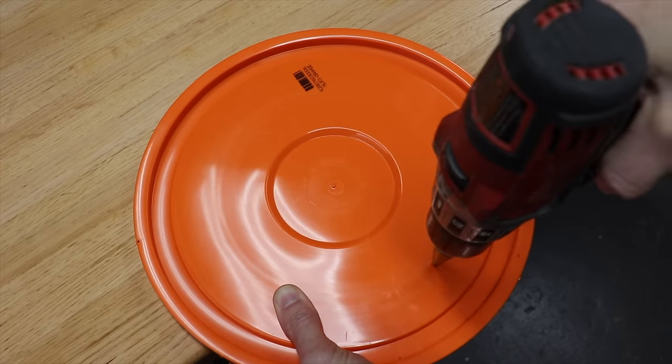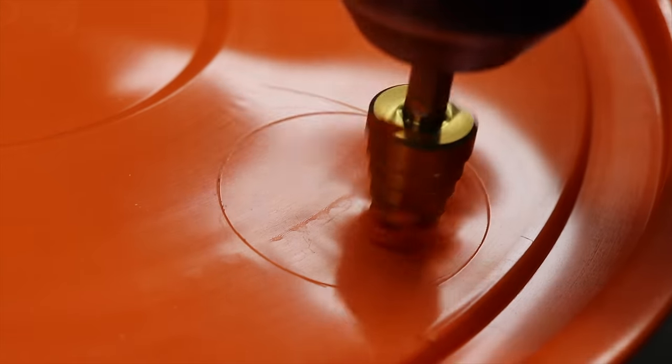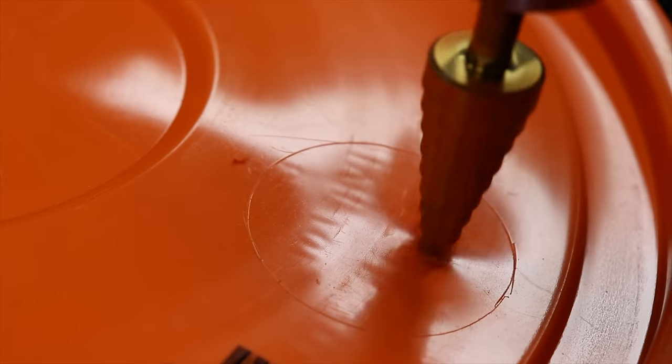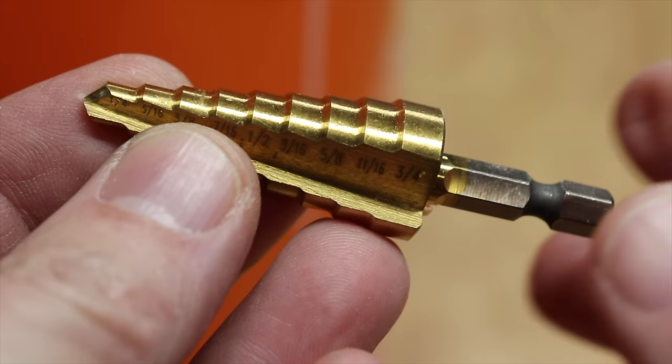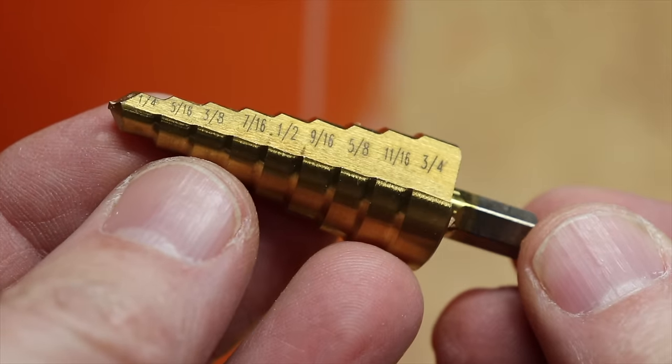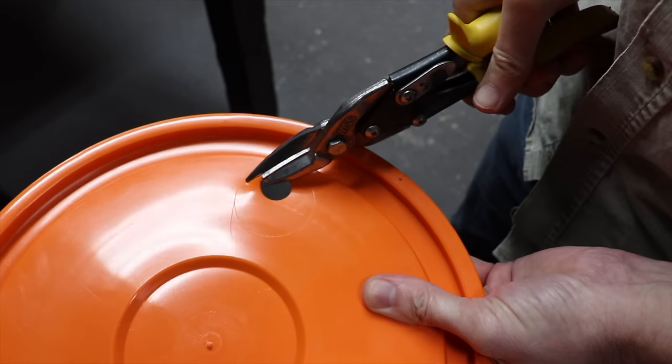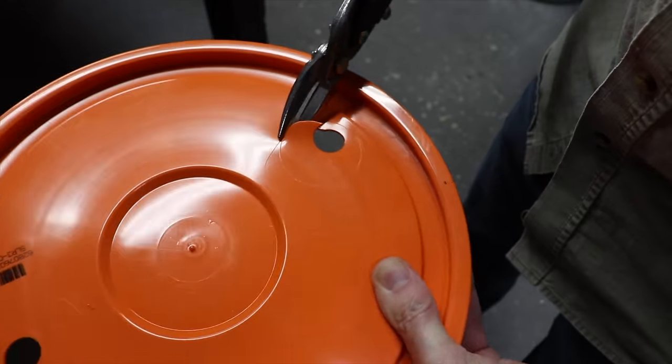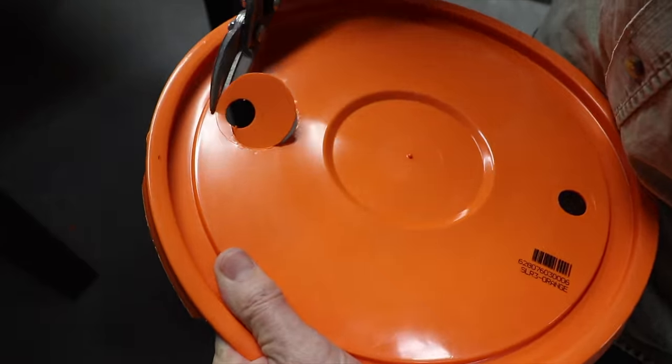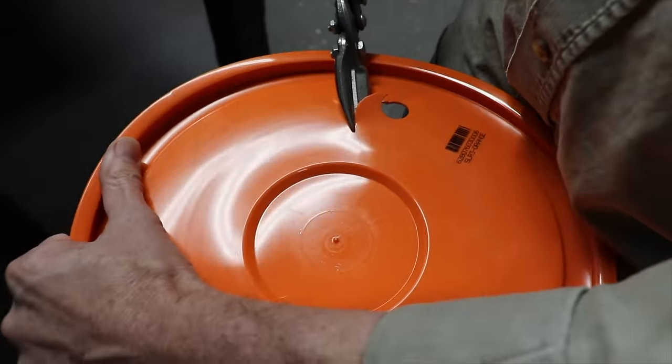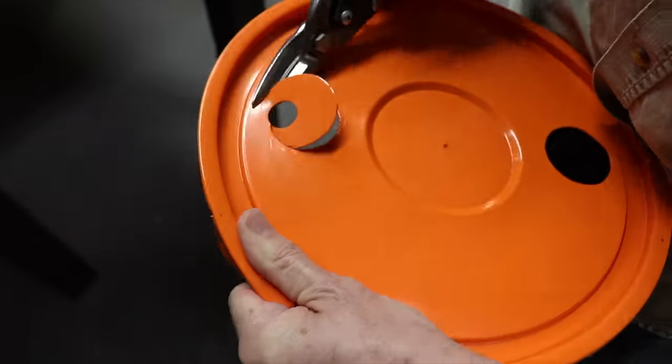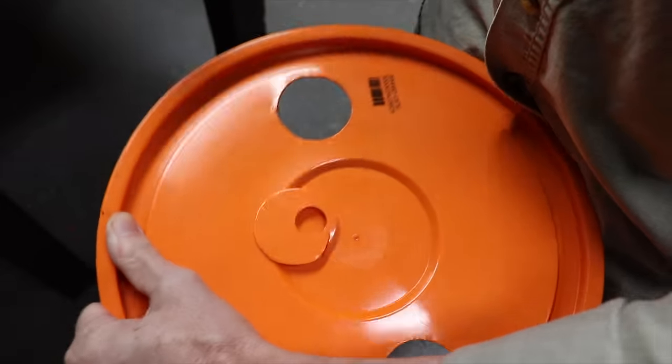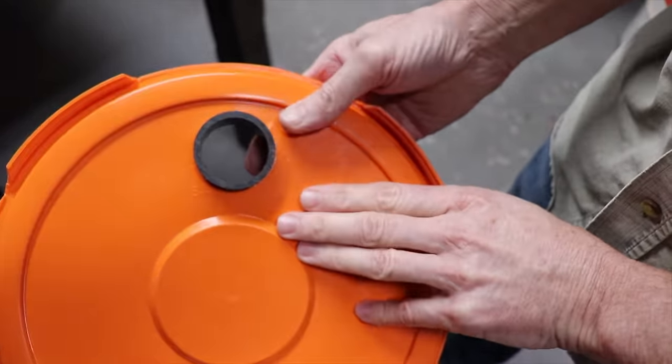Now take a drill and drill a starter hole. These stepper drills are great for cutting plastic. I'll have it linked in the description. Now take your snips and cut out the two openings. And when you're finished you want to end up with a nice snug fit.